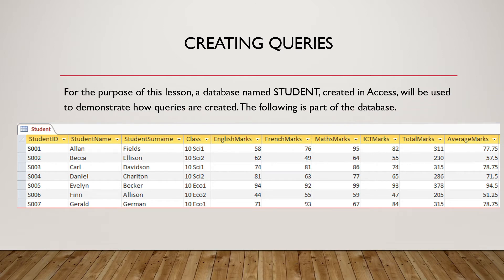Creating queries. For the purpose of this lesson, a database named 'student' created in Access will be used to demonstrate how queries are used. The database contains the fields: student ID, student name, surname, class, English mark, French mark, maths mark, ST mark, total mark, and average mark. We are going to make use of this student table to create queries.